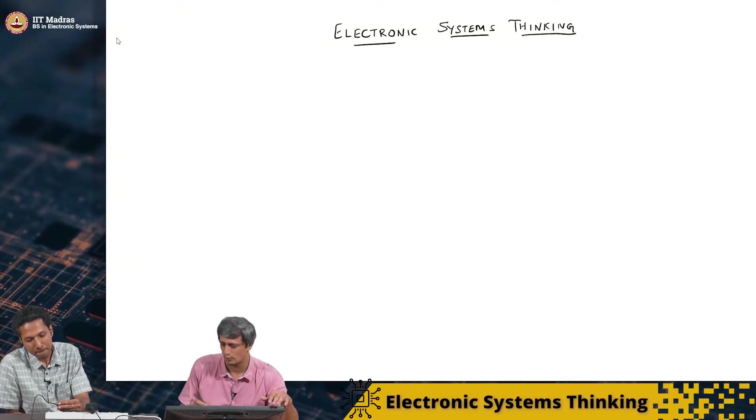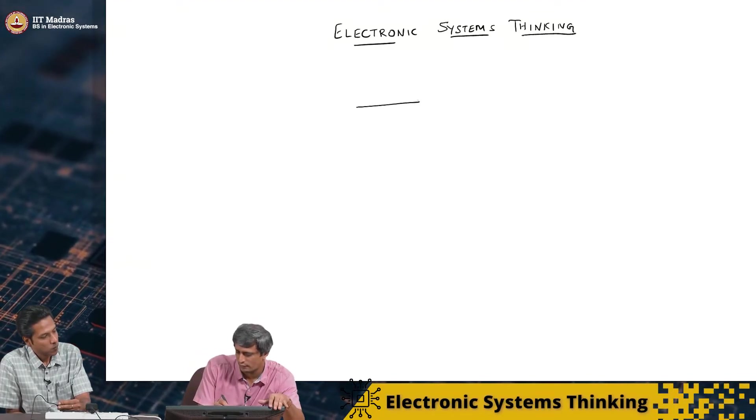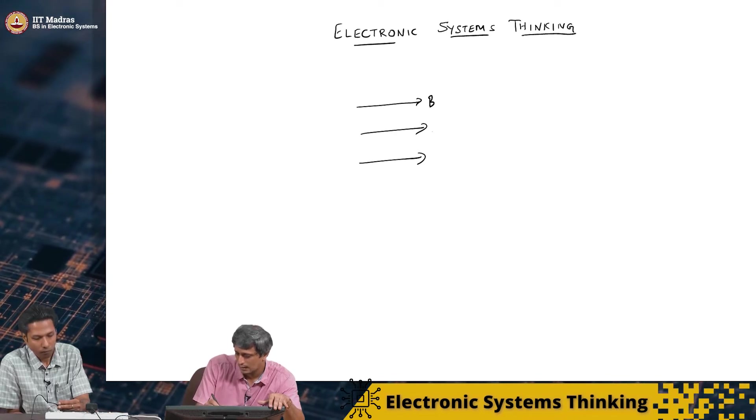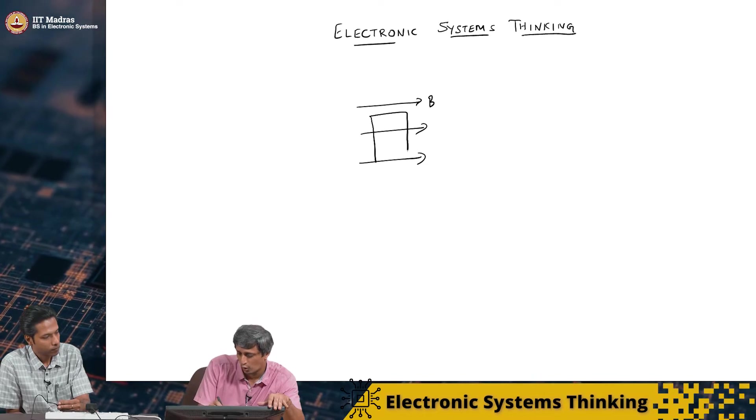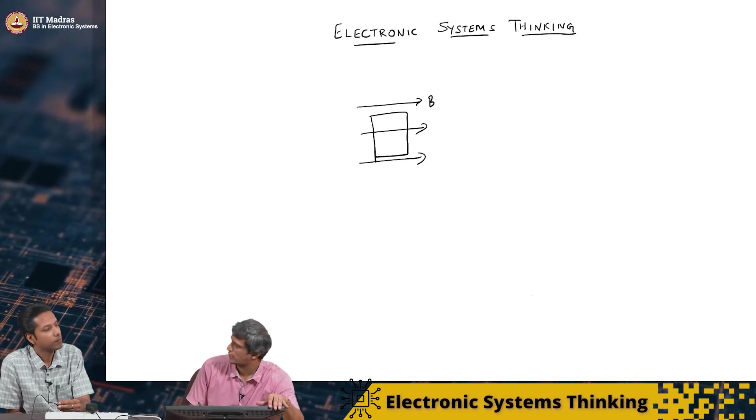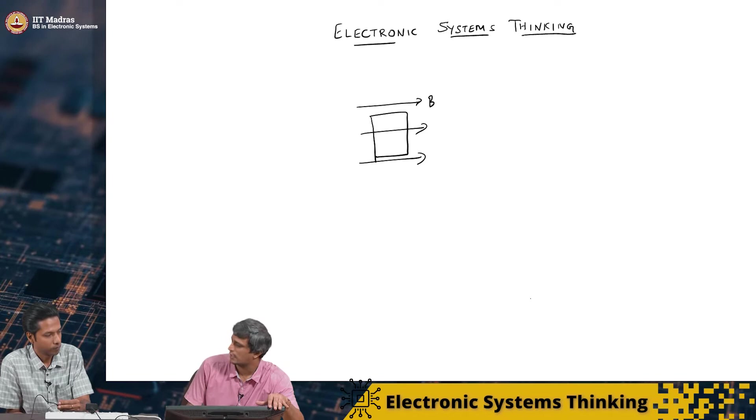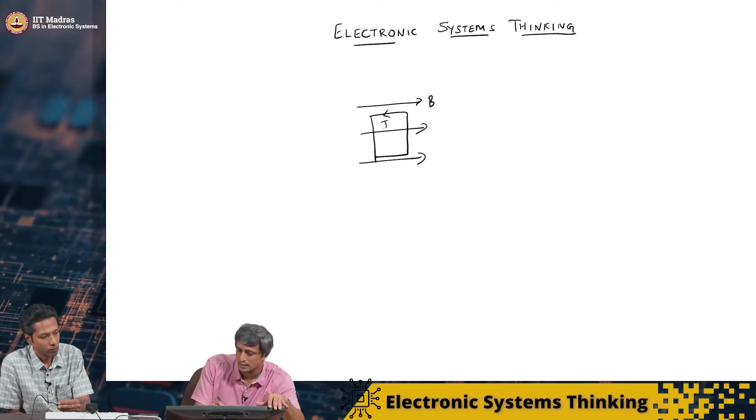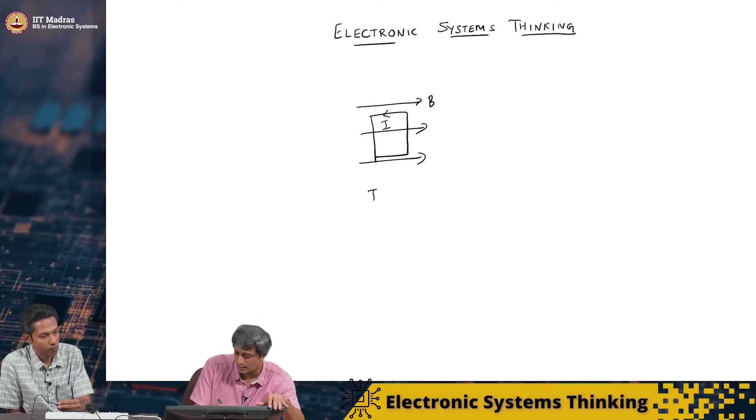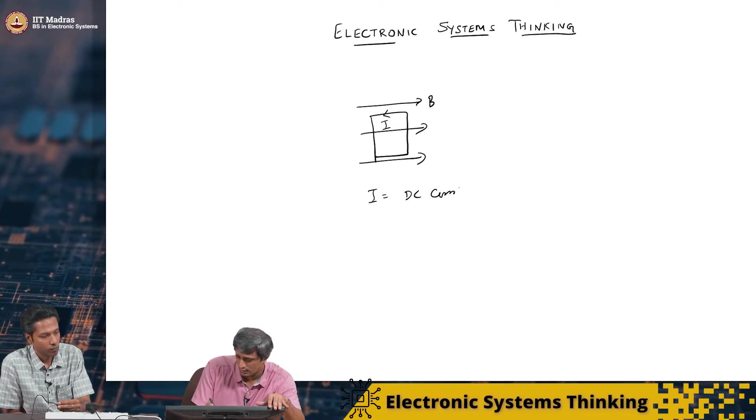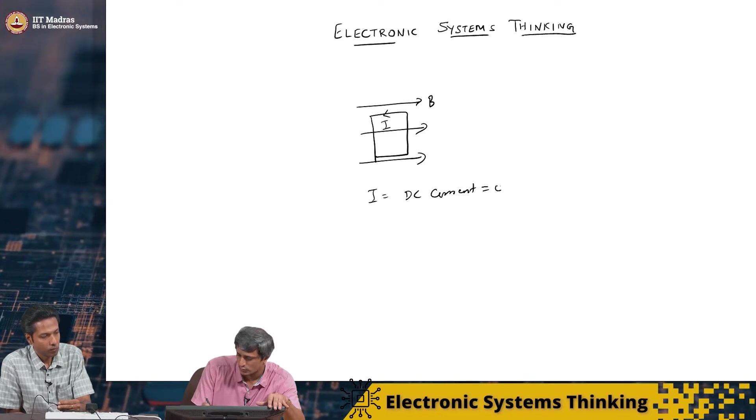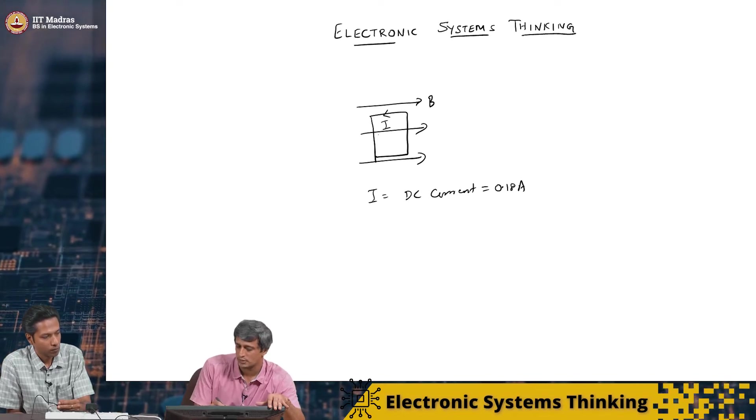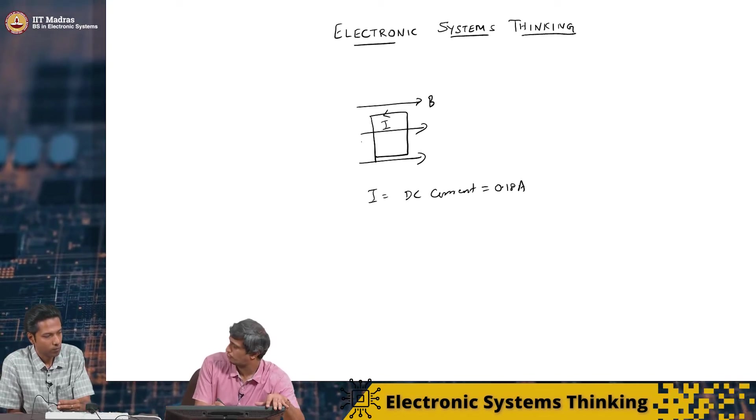So, the fan is working, right? So, when you apply a voltage across this fan, 12 volt and provide the necessary current, this fan is rotating very nicely. So, essentially what is happening inside this fan is you have a fixed magnetic field, ok, B and in this you have a coil.